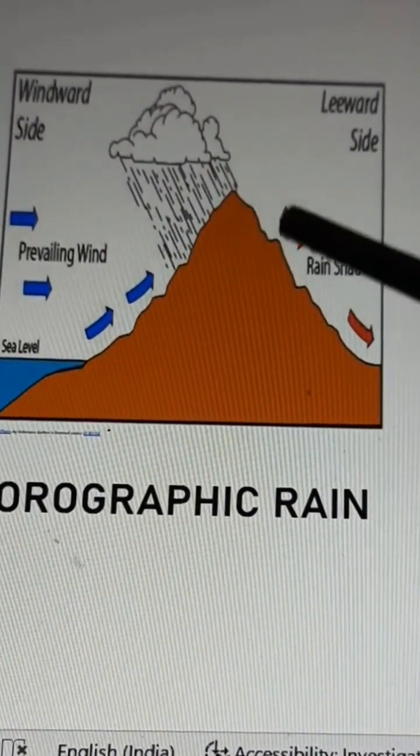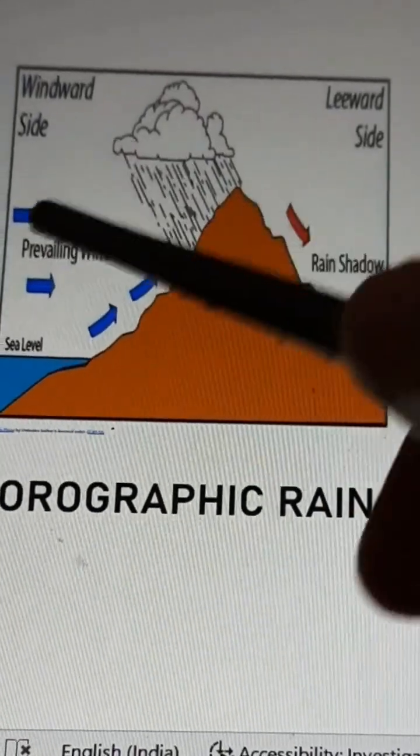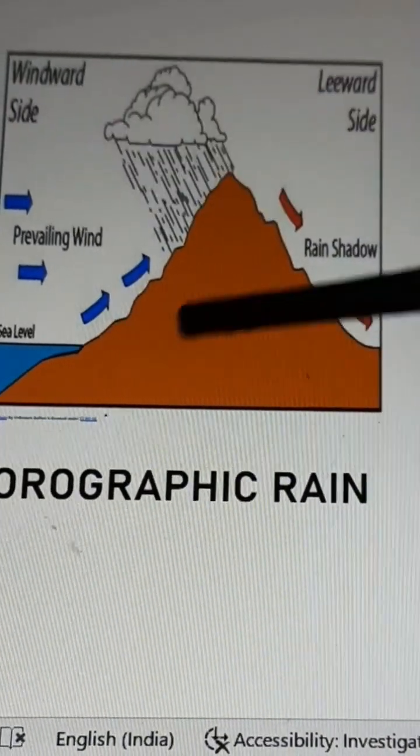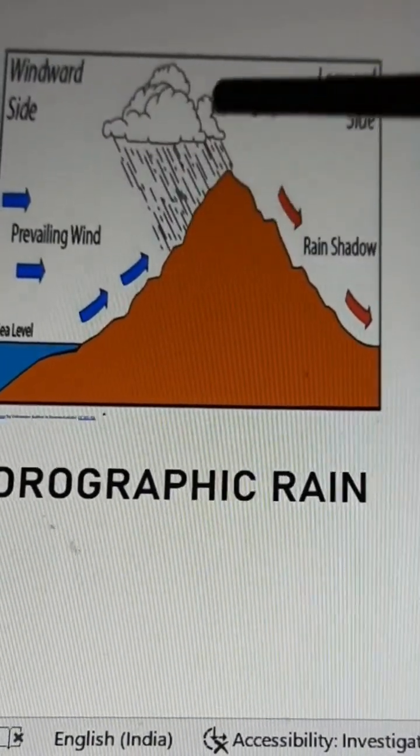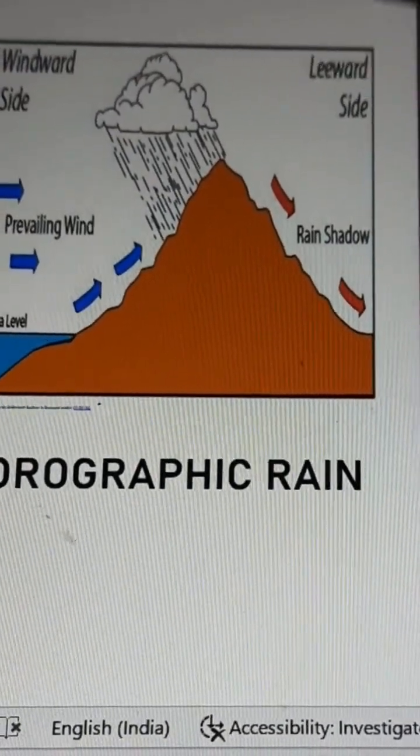The height of the mountain should be sufficient to block the moist incoming air, and the mountain should be aligned with the wind direction so that the wind is forced to move upwards. As it moves upwards, it cools and forms clouds. When overburdened with water vapor, the clouds saturate.